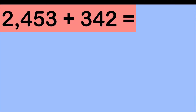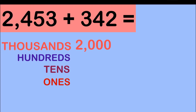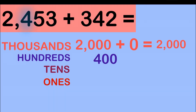How about if we have 2,453 plus 342? Since we have a four-digit number here, we will have thousands, hundreds, tens, and ones. Let's start at the thousands place. At the thousands place, we have digit 2, and its value is 2,000. Since we don't have a digit at the thousands place on the second number, we will write plus 0. So 2,000 plus 0 is equal to 2,000. Let's proceed at the hundreds place. At the hundreds place, we have digit 4, and its value is 400. On the second number, we have digit 3, and its value is 300. Let's add 400 plus 300, which is equal to 700.